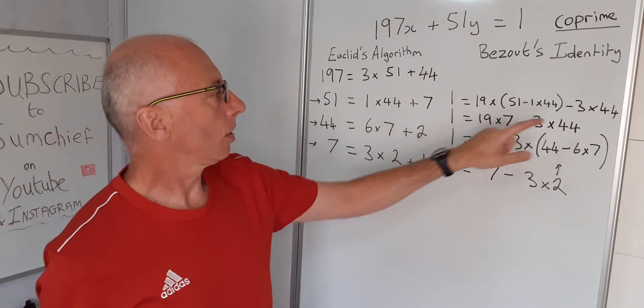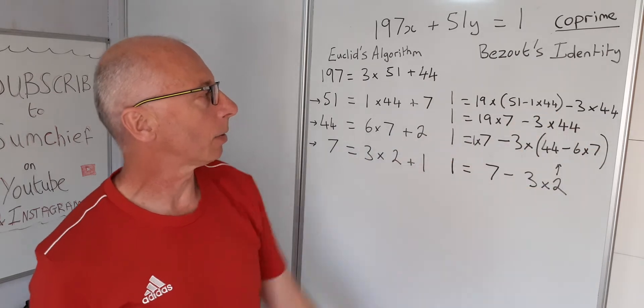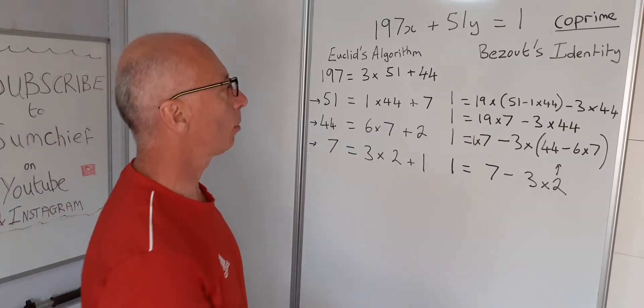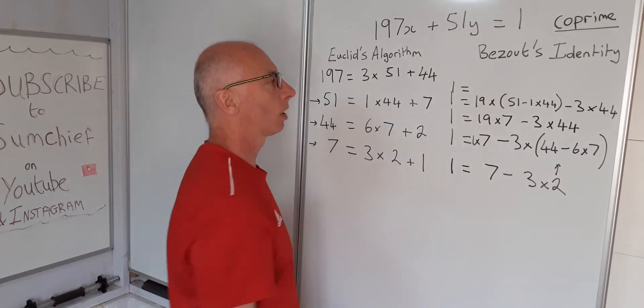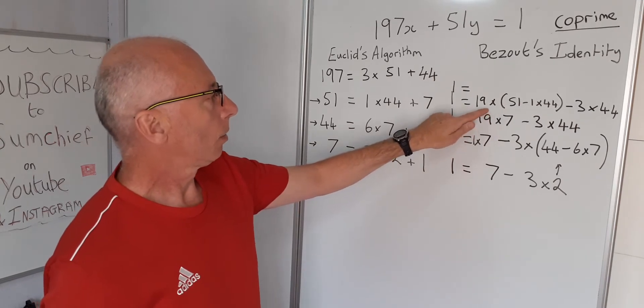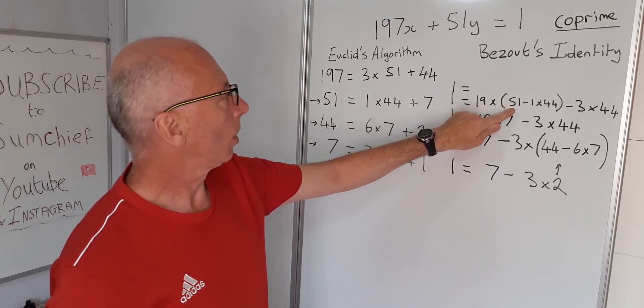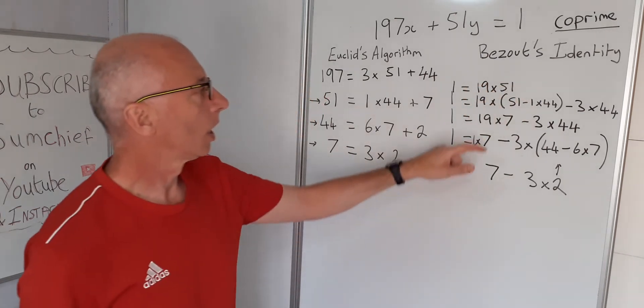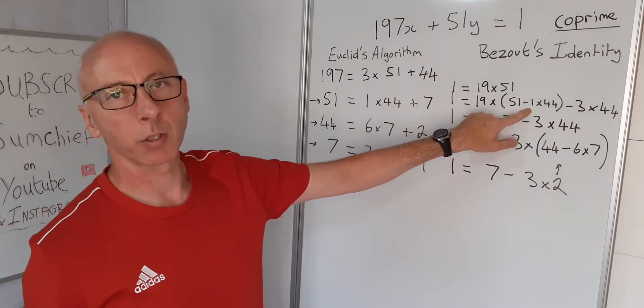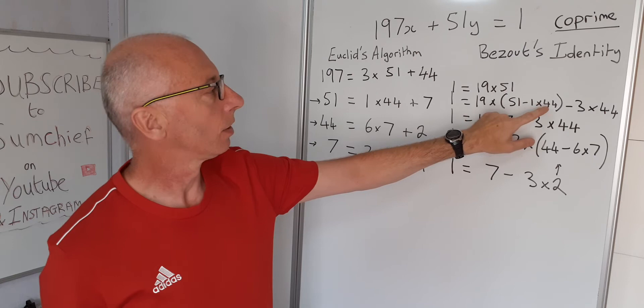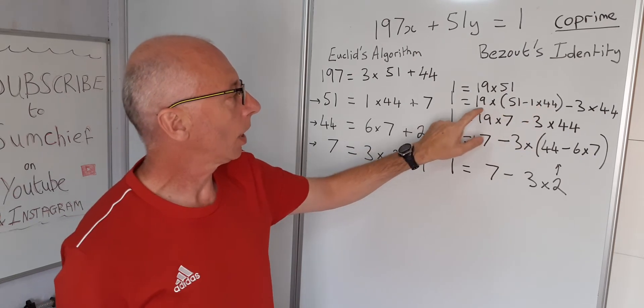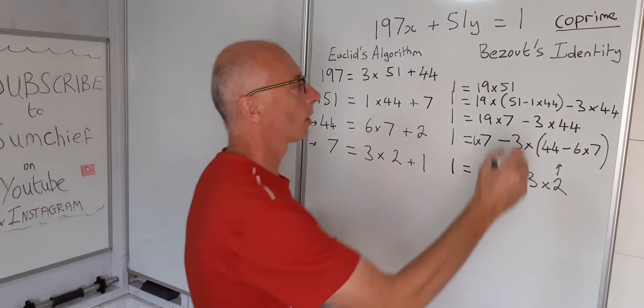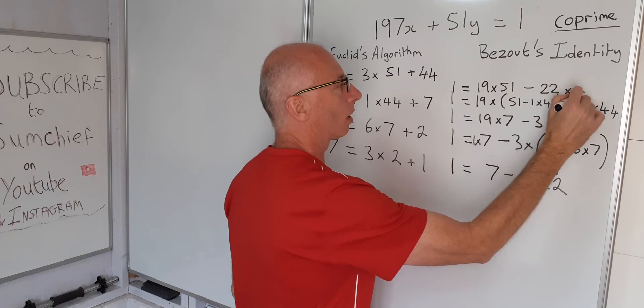And if you were to do the sums on this you would still end up with 1, so this is still a true statement here. Okay, so what we do now again as we did before, we just have to simplify this up a little bit. So we say that 1 equals, so we've got 19 times 51, so we can write that in there, 19 times 51. And then we've got 19 times minus 1, which is minus 19 times the 44. So we've got minus 19 here and a minus 3, so it gives us minus 22 times 44s. So that's minus 22 times 44.